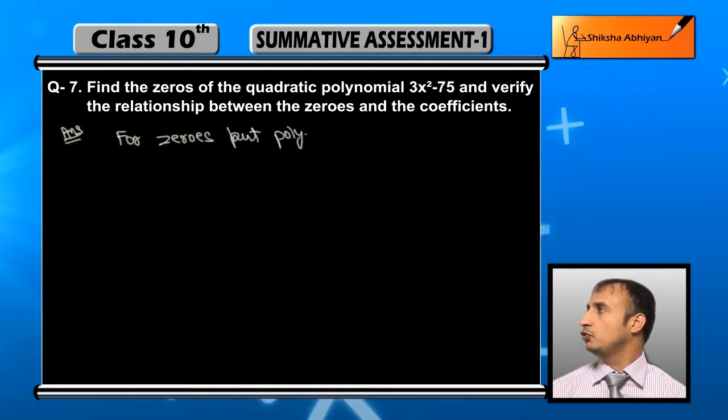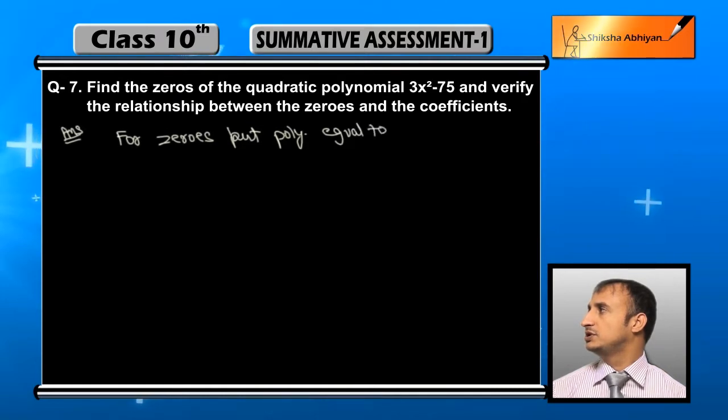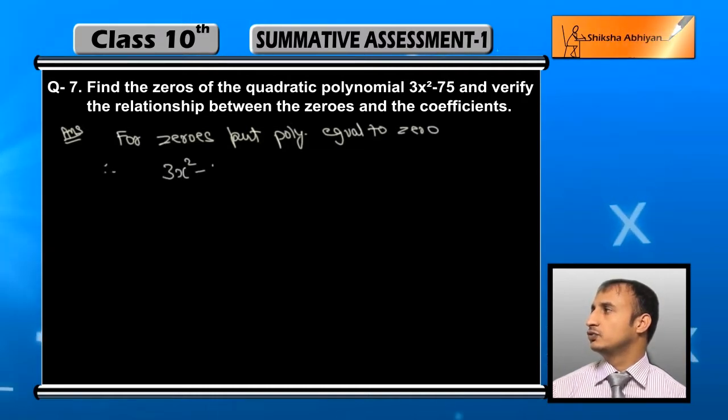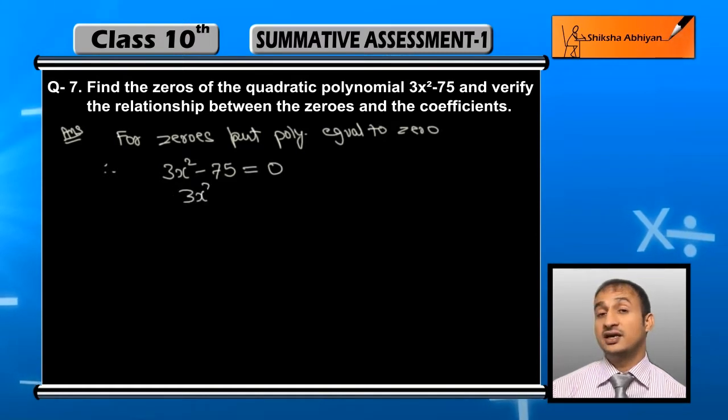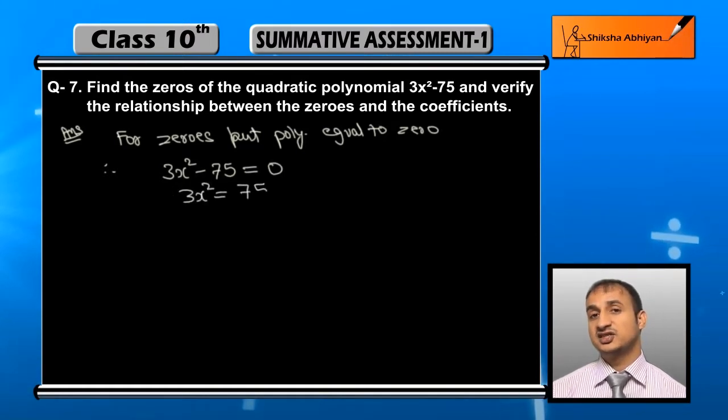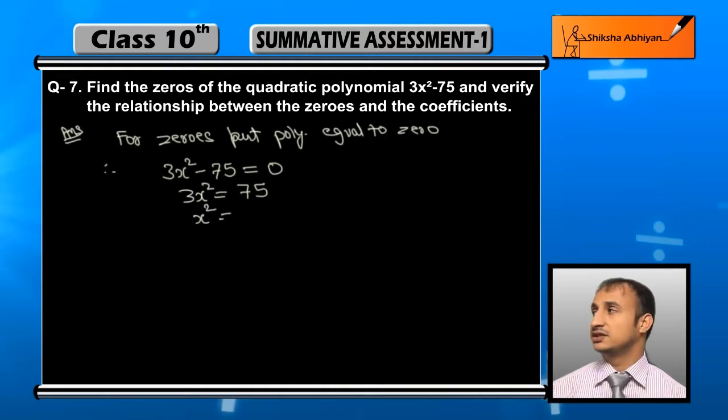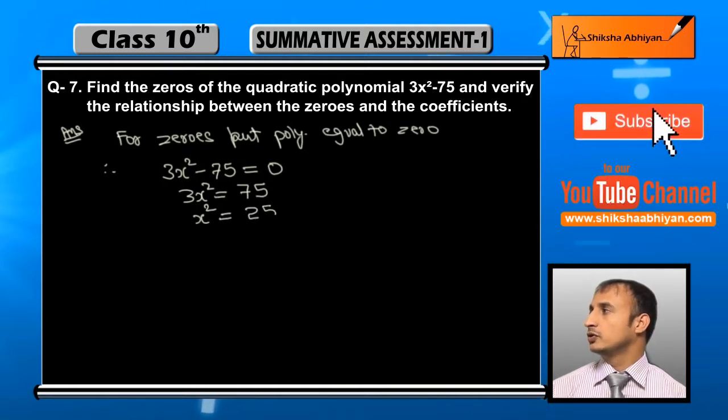So the given polynomial is 3x² - 75 equals zero. This becomes 3x² equals 75, and x² equals 75 upon 3, that is equal to 25. x² is equal to 25.